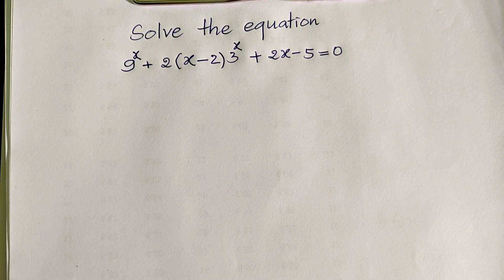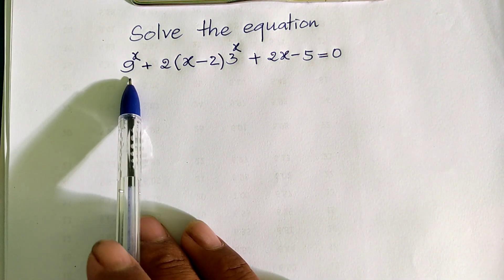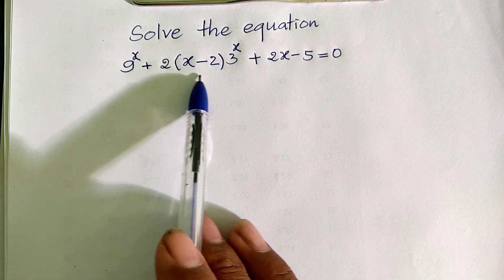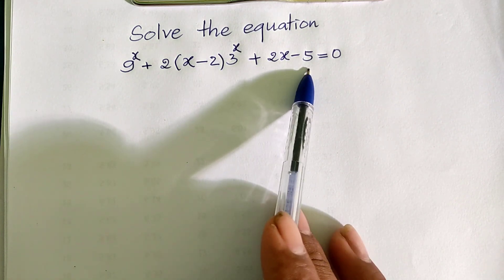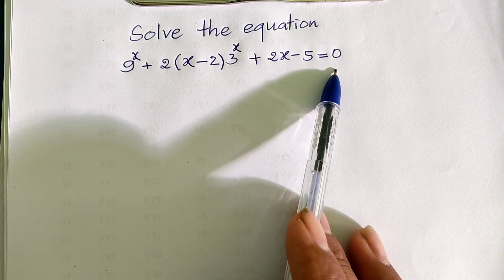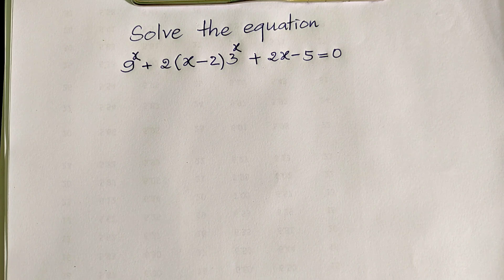Hello everyone, welcome to my YouTube channel. Today I have a math exercise on paper. The equation is: 9 to the power x, plus 2x minus 2, multiplied by 3 to the power x, plus 2x minus 5, equals 0. If you know how to solve this, please do it first, then come back to watch my video from beginning to end to verify your solution. Please don't forget to subscribe to my channel for more exciting videos.